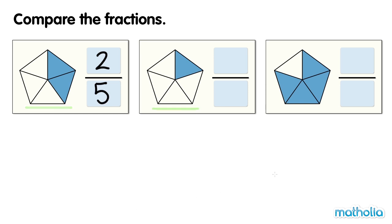In this shape, one part is shaded. One fifth is shaded. And in this shape, four parts are shaded. Four fifths are shaded.